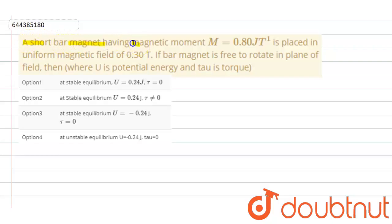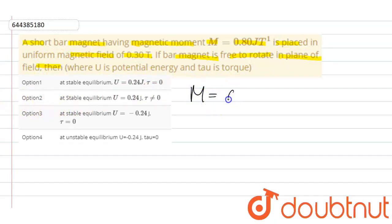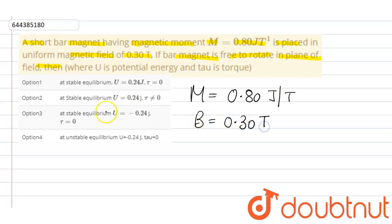A short bar magnet having magnetic moment M equals 0.80 joule per tesla is placed in a uniform magnetic field of 0.30 tesla. If the bar magnet is free to rotate in the plane of the field, this question is based on the chapter magnetism. Magnetic moment is given as 0.80 J/T and the magnetic field is 0.30 T. The conditions discuss stable and unstable equilibrium.